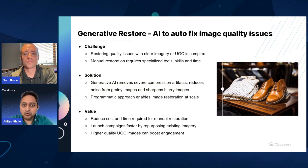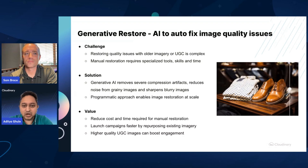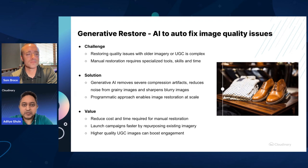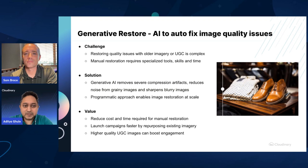With generative AI from Cloudinary, you can now remove all of these quality issues automatically. It's simply embedding a specific parameter in the URL and you can easily improve the quality of that image. As you can see in the screenshot, the image looks visually more clear and richer. One of the benefits with Cloudinary is that you can do this programmatically, meaning you can apply changes at scale for hundreds of thousands of images.